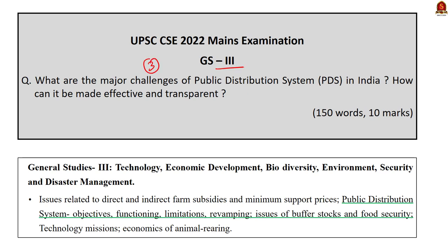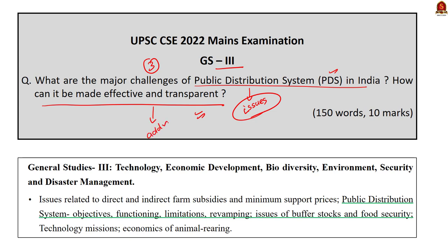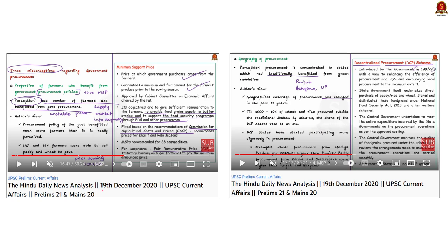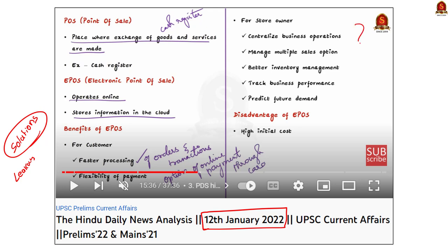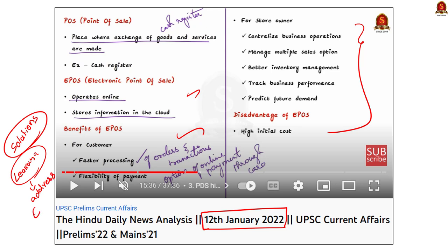Question number 3 in GS Paper 3: 'What are the major challenges of the public distribution system in India? How can it be made effective and transparent?' This is a straightforward question — the examiner asks about the challenges with the PDS and how they can be addressed. The challenges we covered while discussing MSP in our 19th December 2020 Hindu News Analysis. For solutions, one major issue with PDS is leakages — in our 12th January 2022 Hindu News Analysis, we saw about EPOS and its advantages in addressing leakages.